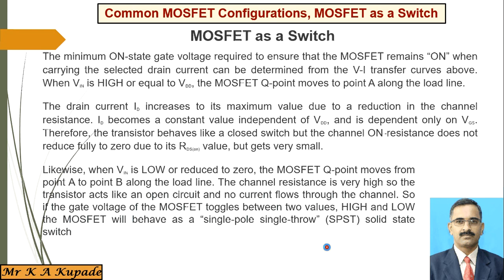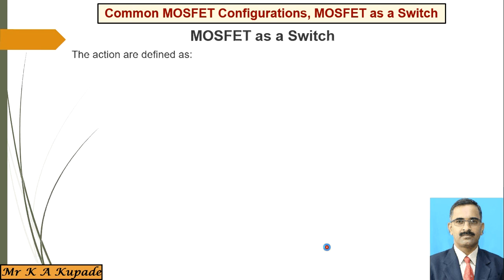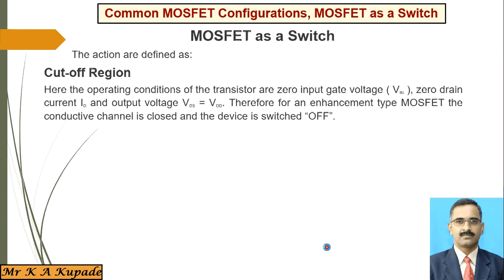This action is defined by two kinds of operating conditions. The first is the cutoff region. Here, the operating condition is zero input voltage. Due to this zero input voltage, the drain current ID is also zero, and the output voltage VDS is nearly equal to VDD. Therefore, the enhancement-type MOSFET conductive channel is closed, having high resistance with no current flowing through the drain region, so the device is in the switched-off position.